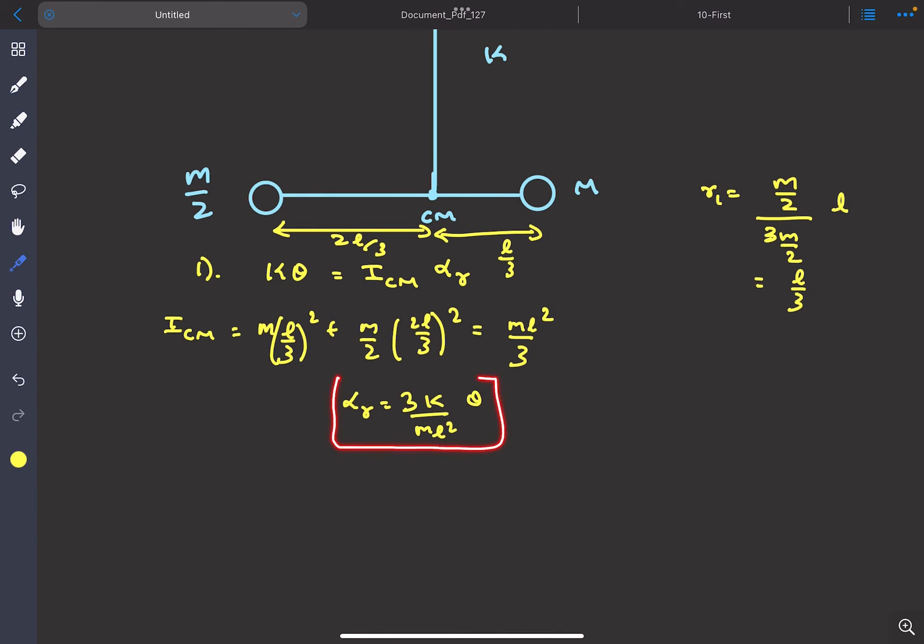This is an important relation. The restoring α is coming out to be proportional to the angular displacement from the mean position. This means that the rod is performing angular SHM.